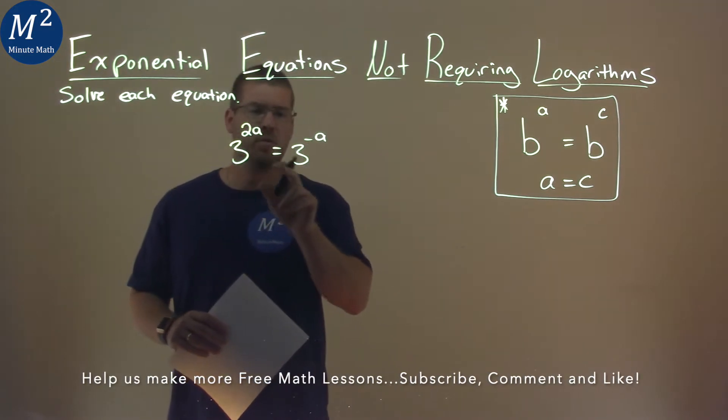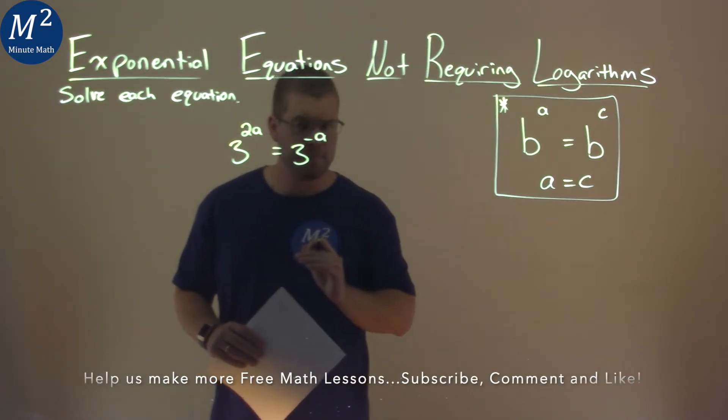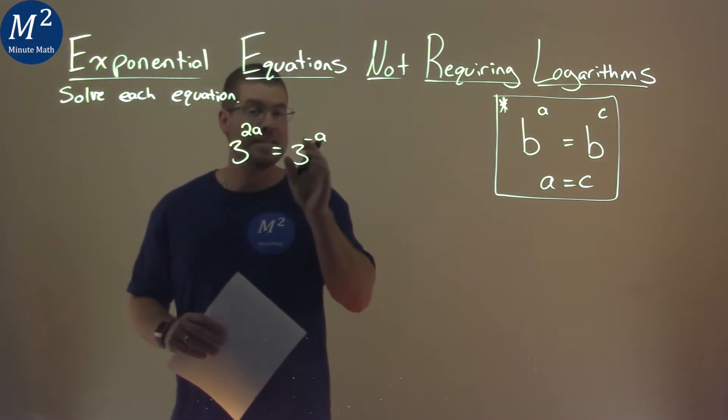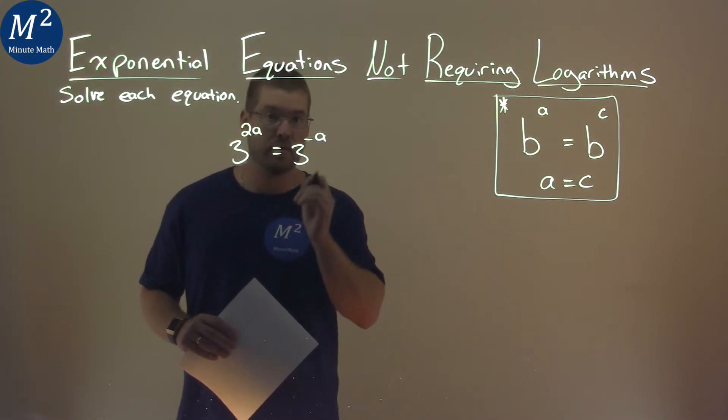Well, our base is the same here with both being 3. So, with that being said, we can take the exponents and set them equal to each other and solve.